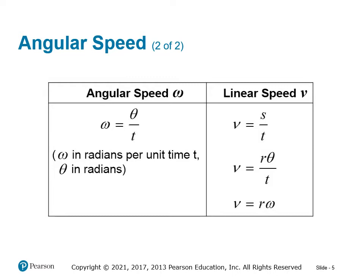Here's a great table to have in your notes. We have the two main formulas: omega equals theta over t, which is angular speed, and linear speed v equals arc length S over time. Remember that arc length also equals radius times theta. So an alternative formula for linear speed is r·theta over t. Since theta over t equals omega, we can see that linear speed equals radius times omega. So linear speed and angular speed are related by the multiplier of the radius.